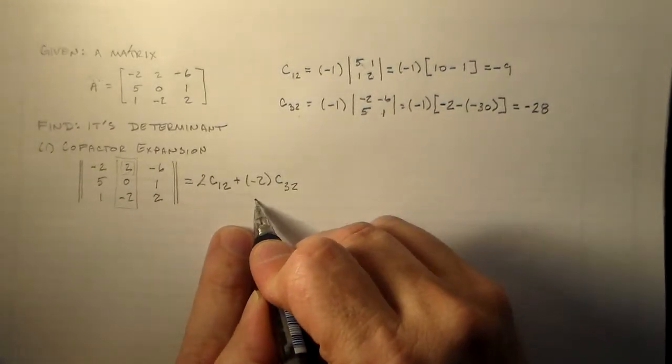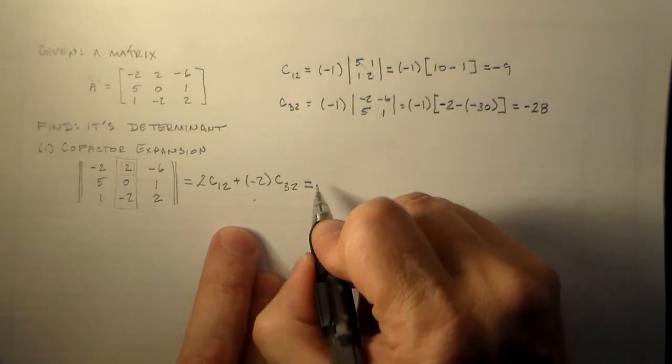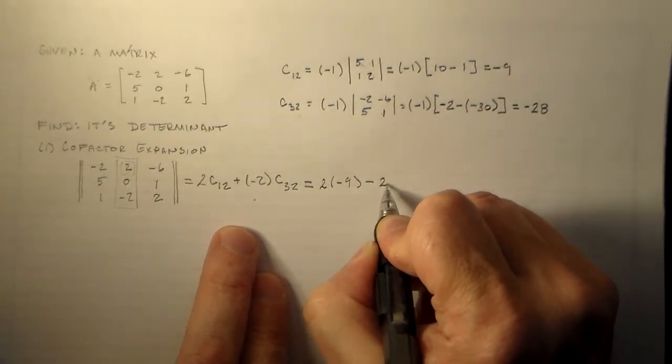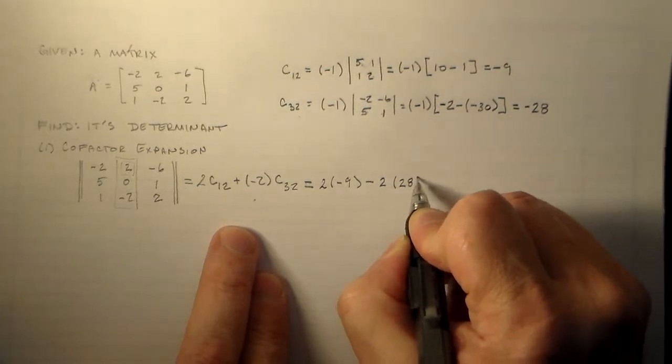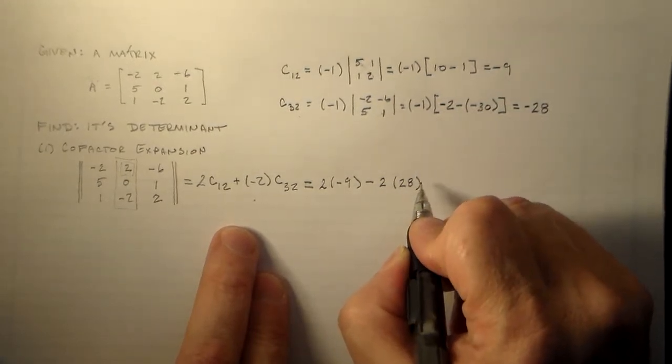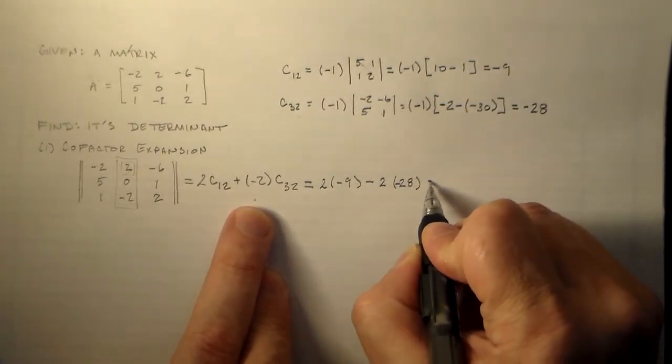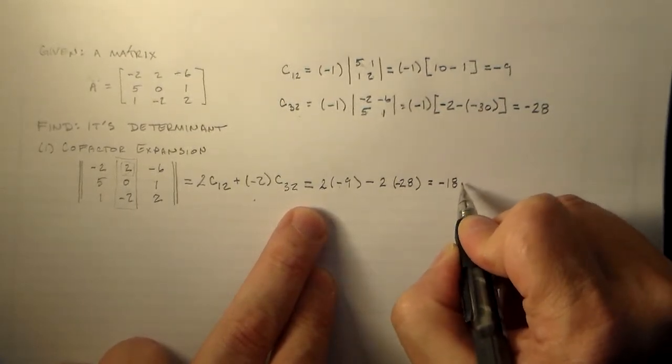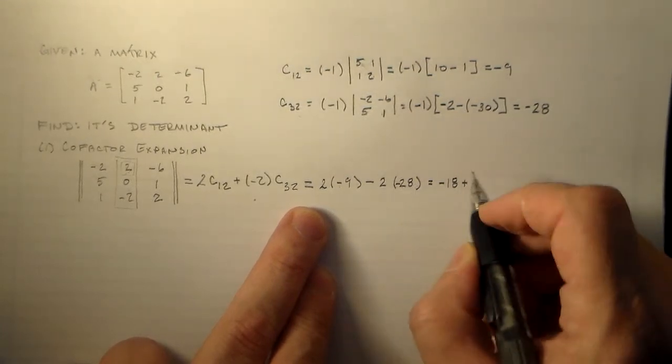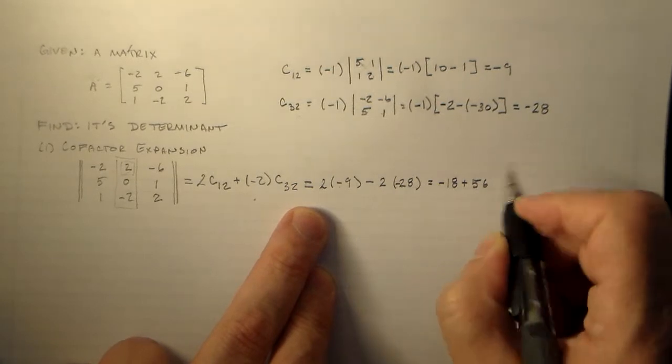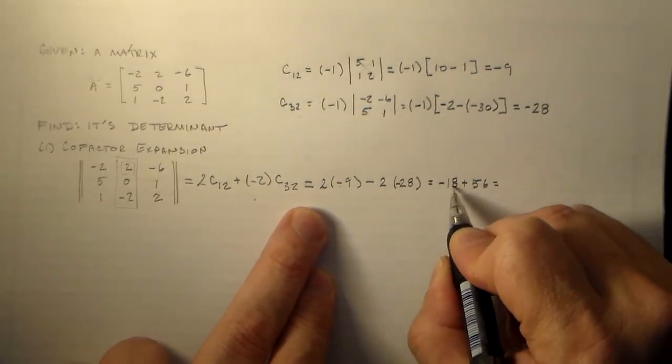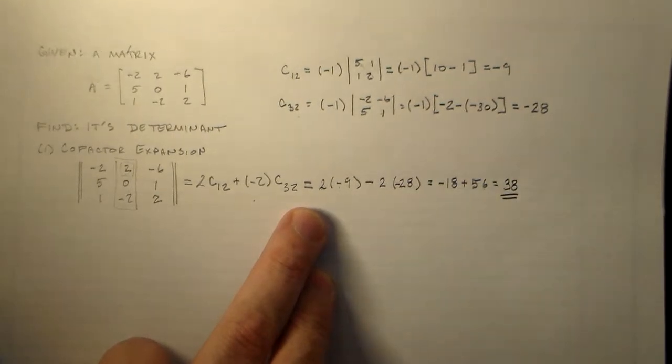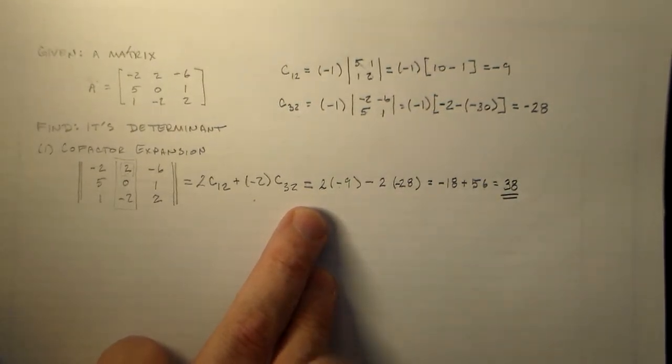Okay. And now we can use these two times in here. So then we have two times minus nine, minus two times twenty-eight. Right. Is that correct? Oh, minus two times minus twenty-eight. Okay. Good. So two times minus nine is minus eighteen, plus two times twenty-eight, which is fifty-six. Which means we subtract eighteen from fifty-six, which gives us thirty-eight. Right. So, according to this procedure, our determinant is thirty-eight.